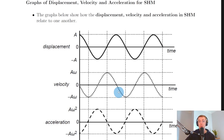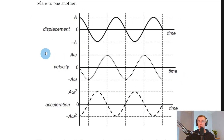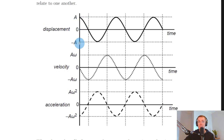The graphs below show how the displacement, velocity, and acceleration in SHM relate to one another. You can see the displacement against time, velocity against time, and acceleration against time. On the y-axis: for displacement you've got amplitude A and minus A; for velocity, A omega and minus A omega; and for acceleration, A omega squared and minus A omega squared.